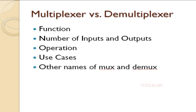Now we can see some other names for the DEMUX. A data distributor: since a DEMUX distributes one input to multiple outputs, it can be referred to as a data distributor. Data DEMUX is a short abbreviation of data demultiplexer. In applications where it selects or distributes signals among different lines, it can be called a line demultiplexer. When used for routing signals to different channels, it may be referred to as a channel demultiplexer.